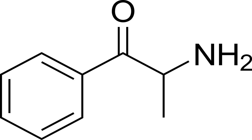Substituted cathinones, which include some stimulants and entactogens, are derivatives of cathinone. They feature a phenethylamine core with an alkyl group attached to the alpha carbon, and a ketone group attached to the beta carbon, along with additional substitutions. Cathinone occurs naturally in the plant khat, whose leaves are chewed as a recreational drug.